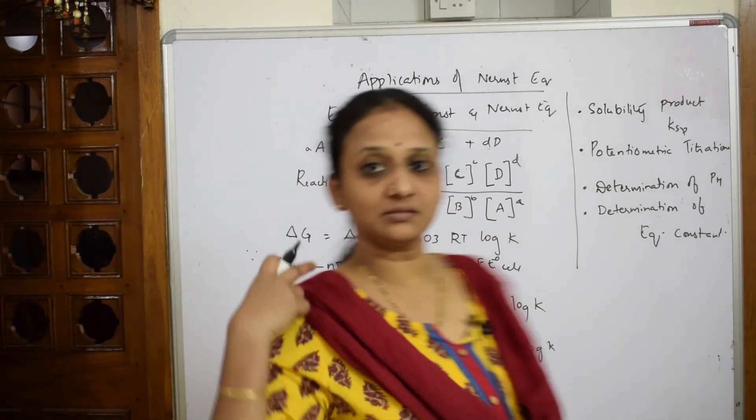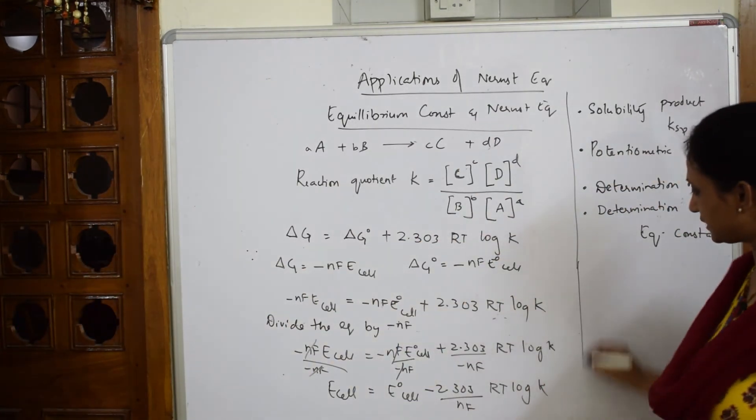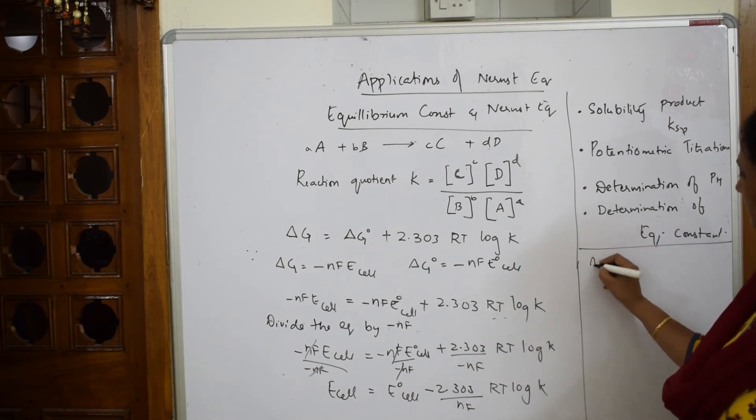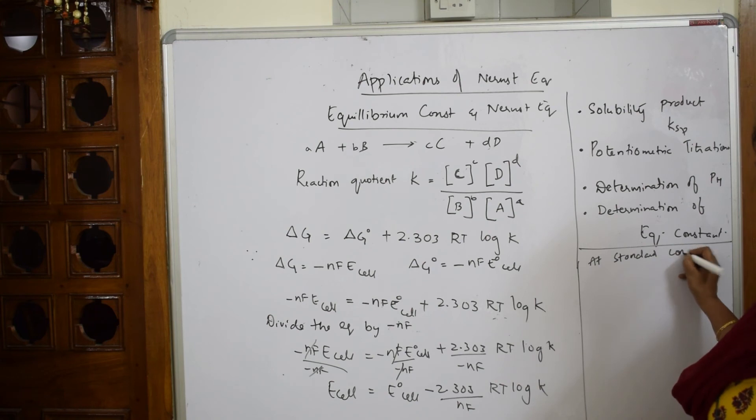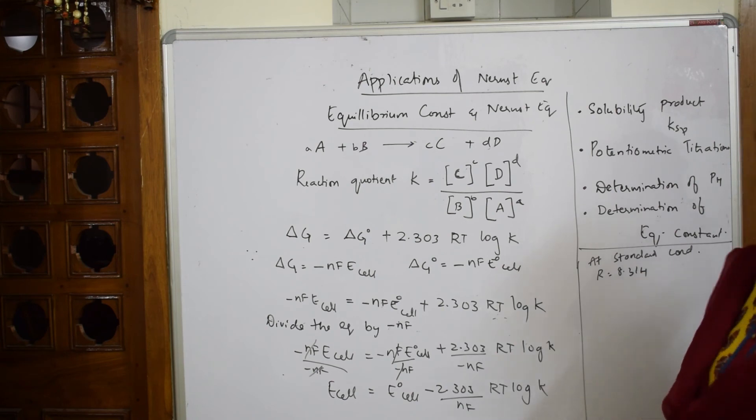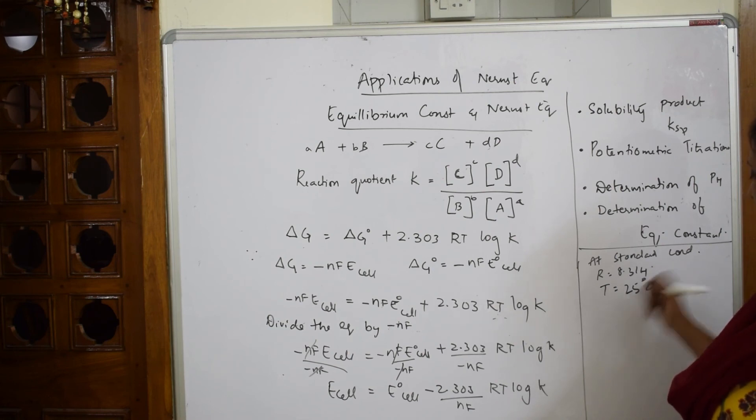Now I am still not completed the equation. I have to find or solve this whole thing. Now at standard conditions, where your gas constant is 8.314 joule kelvin inverse per mole inverse, your temperature is 25 degree centigrade, your Faraday is 96500 coulombs per mole inverse.